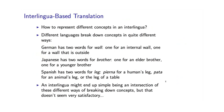The downside to interlingua-based approaches is that it is very, very difficult to come up with a truly language-independent representation of meaning. It might even, from a philosophical point of view, be an impossible problem. Different languages tend to break down concepts in the world in quite different ways. For example, in English we have a single word for wall, but in German there are actually two words for wall — one for a wall that is internal to a house, and one for an external wall on the outside of a house.